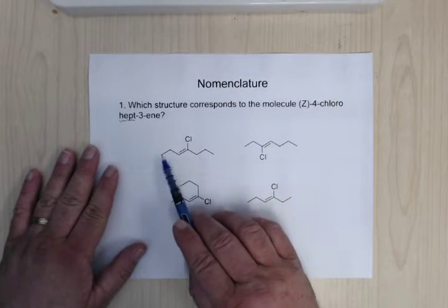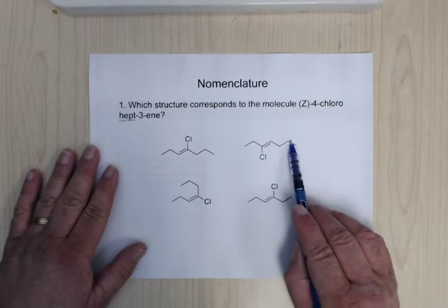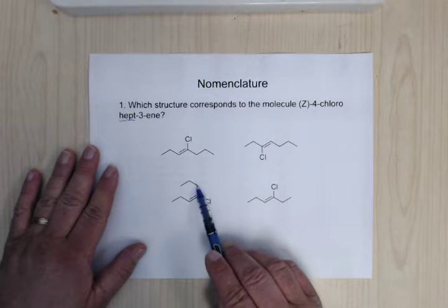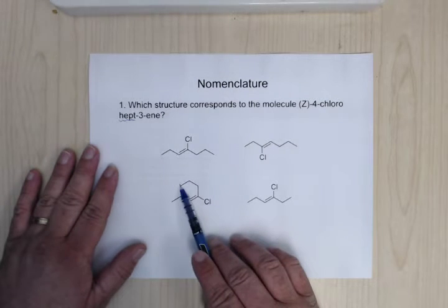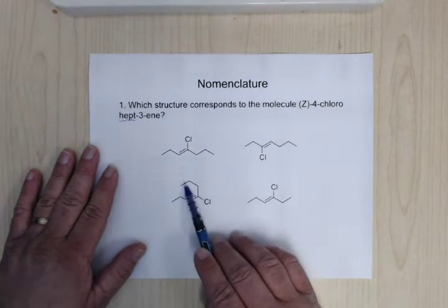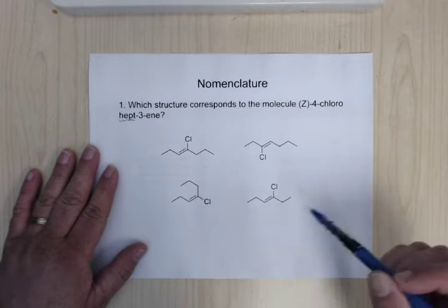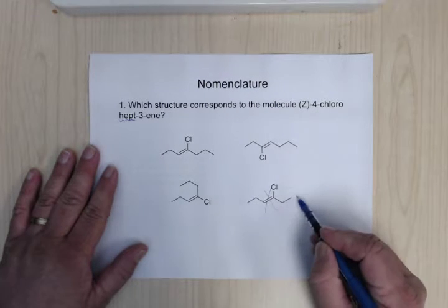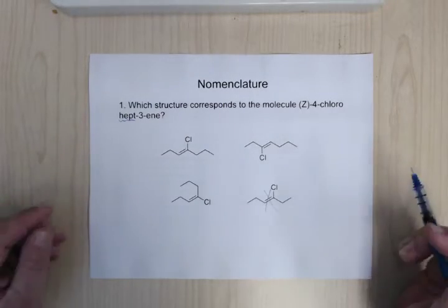Count the carbons in each answer choice — one through seven. Don't forget that when you're finding the main chain, you can go off side chains. Counting one path gives six carbons, so we know it's not that one because it's only six carbons long. We knocked one out before doing much else.